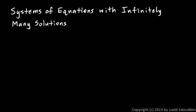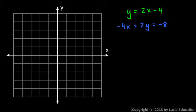And it's also possible to have a system of equations with infinitely many solutions. Let's look at an example. y equals 2x minus 4, and negative 4x plus 2y equals negative 8.